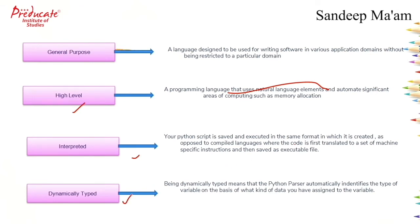The next one is dynamically typed. This means that for whatever variables we have, we do not need to specify what data type a particular variable should be. Whatever value you assign to a variable, it automatically picks up its data type according to that value. So Python automatically identifies the type of variable based on what kind of data you have assigned to it.